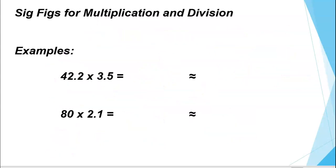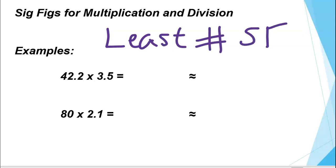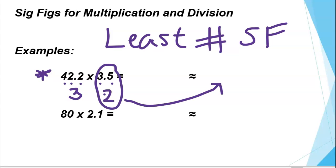Last but not least, significant figures for multiplication and division. When doing multiplication and division, it does have to do with significant figures. Your answer should have the same number of sig figs as the value with the least number of significant figures. In the first example, 42.2 has three significant figures and 3.5 has two significant figures. The least number of significant figures is in 3.5, so our final answer should have two sig figs.